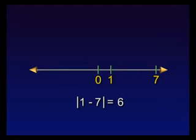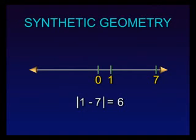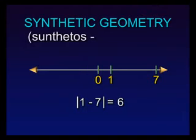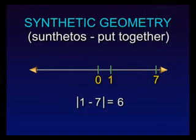Describing points and lines in this way takes us into the study of synthetic geometry. That word makes some sense when you realize that it came from the Greek word suntheros, which means put together. We are putting the discrete or separate elements together to make continuous figures.